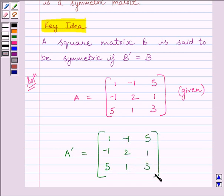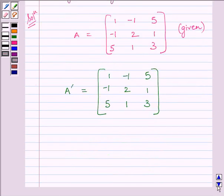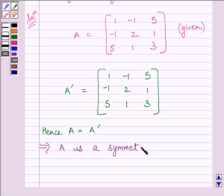Now we can see A and A transpose both are exactly same. So this implies A is equal to A transpose. Now since A is equal to A transpose, this implies A is a symmetric matrix, as we have already read in key idea.